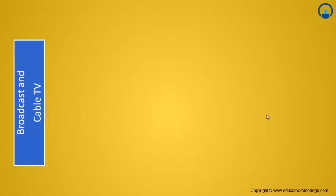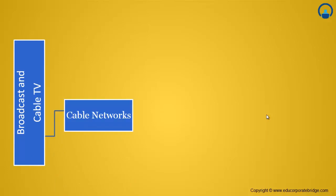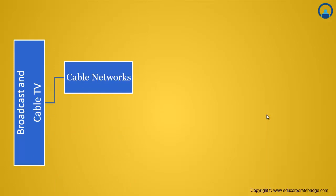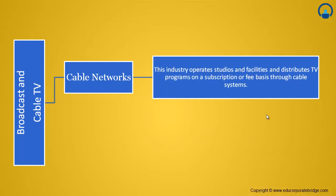The broadcast and cable television industry has been divided into two segments. The first is cable networks, which operates studios and facilities that distribute TV programs on a subscription or fee basis through cable systems. It includes specialty TV cable networks and pay-per-view programming, and excludes programming production and satellite broadcasters.